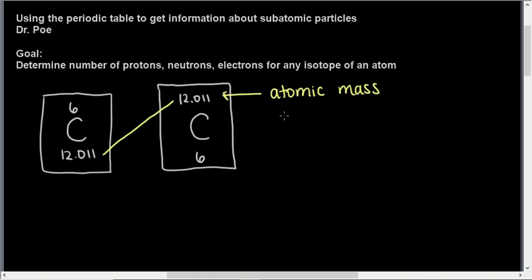This atomic mass is actually based on carbon, and we'll talk more about that later when we talk about the mole. The next number you'll see is the one that doesn't have a decimal — it will never have a decimal. That could be at the top or the bottom depending on the table. That is our atomic number.